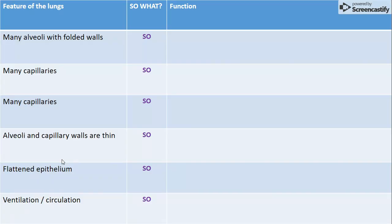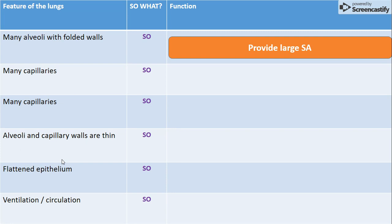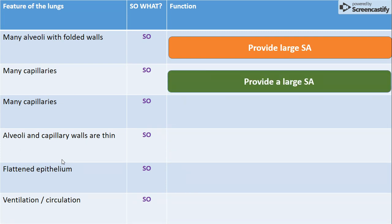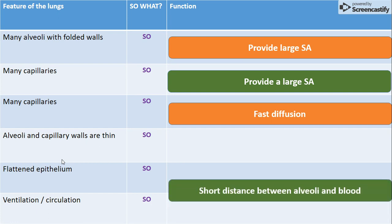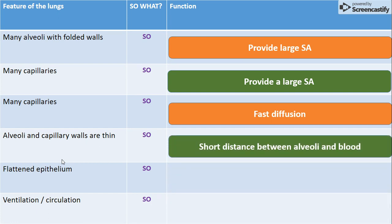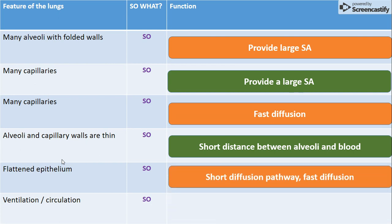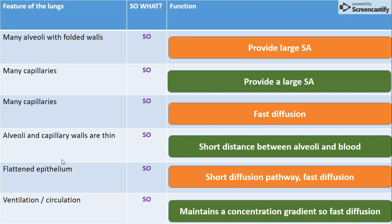Now for a summary table — features of the lungs and their adaptations, really important for your revision. Many alveoli with folded walls provide a large surface area. Many capillaries provide a short and fast diffusion pathway. Alveoli and capillary walls are thin, so the distance between them is short. Flattened epithelium provides a short diffusion pathway. Ventilation and circulation maintain the concentration gradient so that fast diffusion can take place.